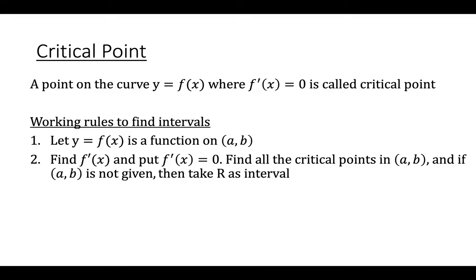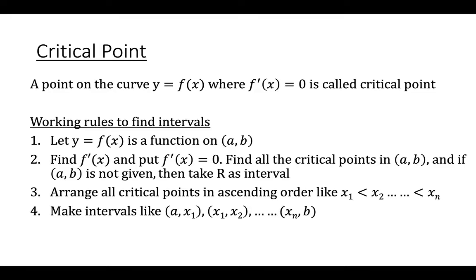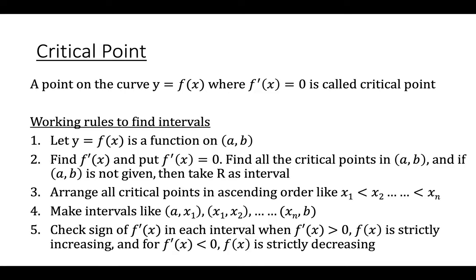If open interval a, b is not given, then take R as the interval. Number 3, arrange all critical points in ascending order like x1 less than x2 less than x3 and so on less than xn. Number 4, make intervals like a to x1, x1 to x2, and so on to xn, b.